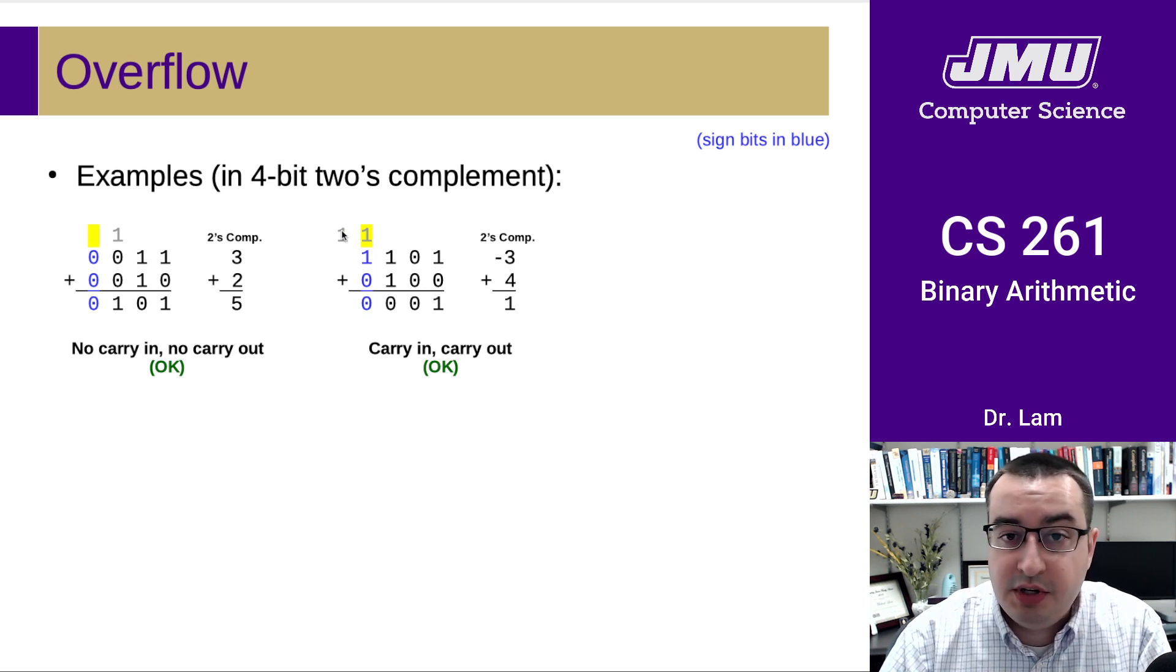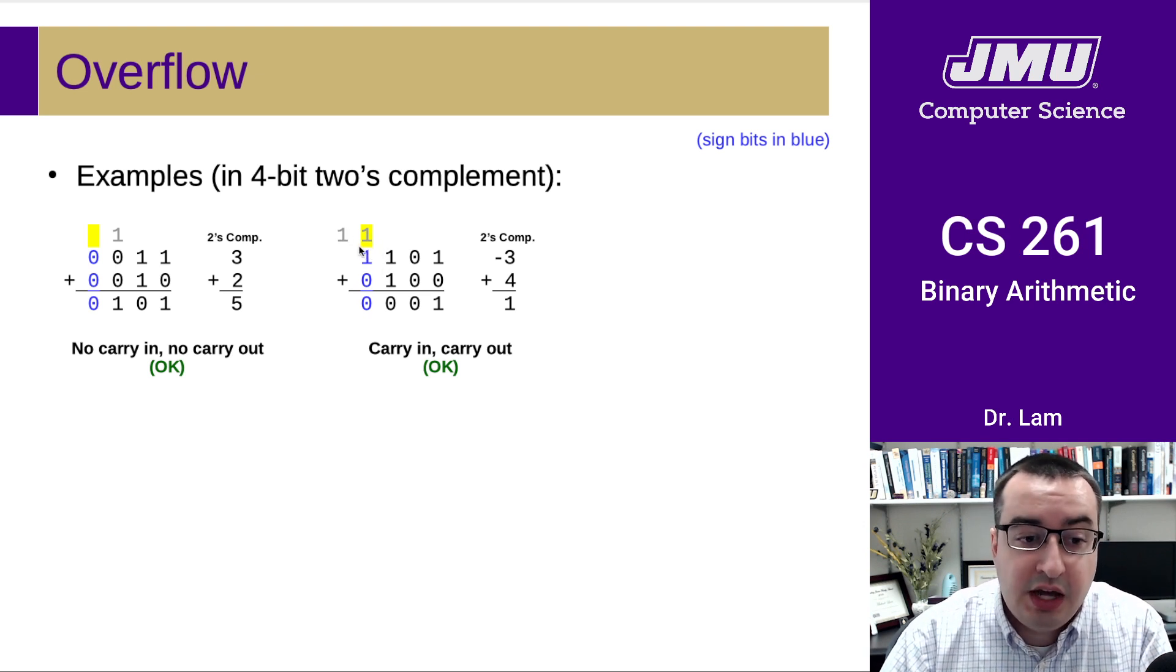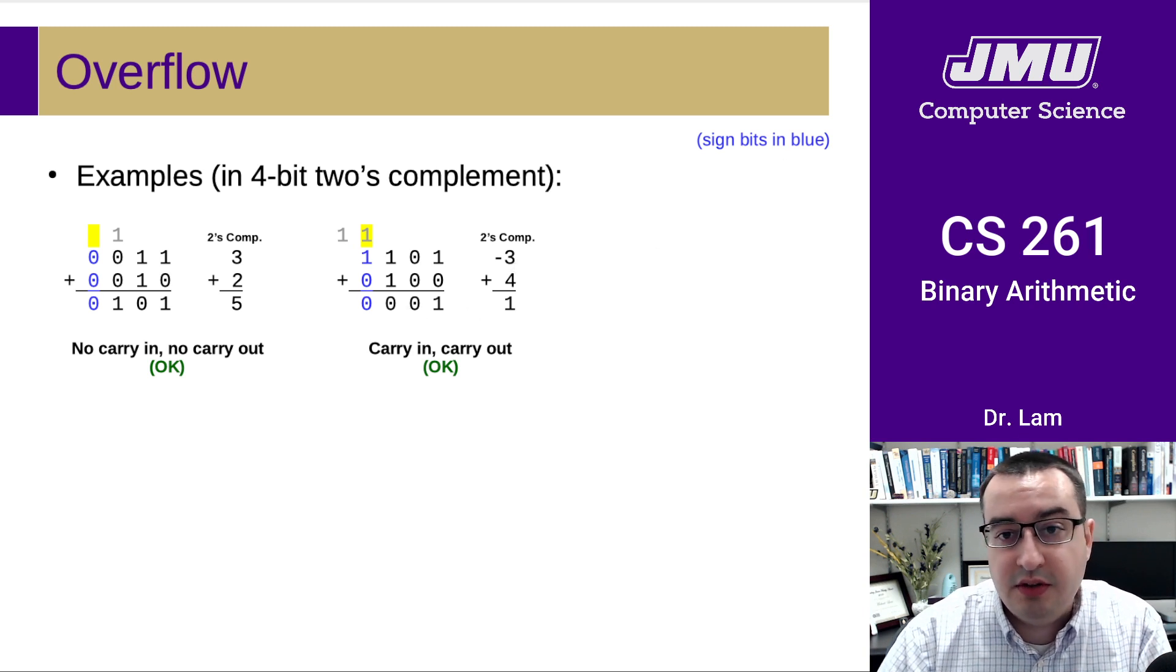And so we might be tempted to think that this is a problem. But if you notice here, we had a carry into the sign bit as well as a carry out of the sign bit. And so that means that we did not, in fact, overflow here. And if we look at the results, we can see that we added negative three and four and we got one, which is valid.